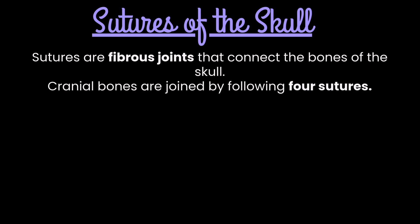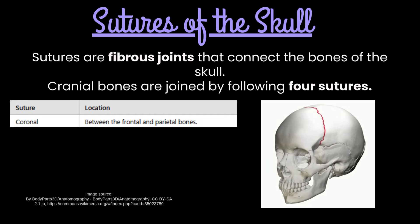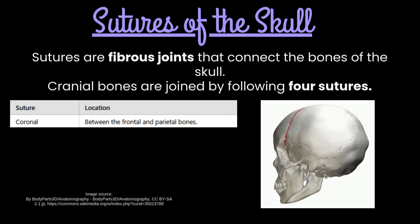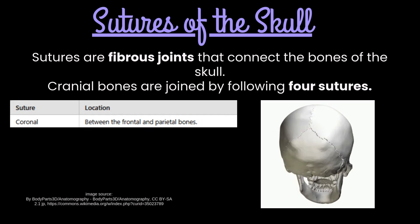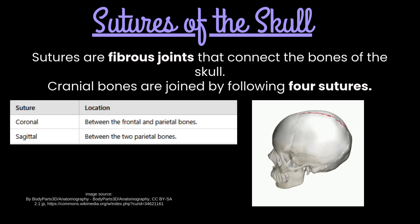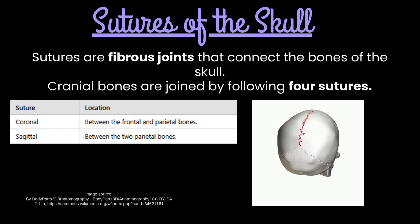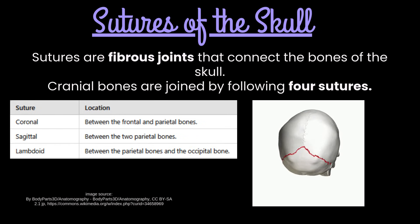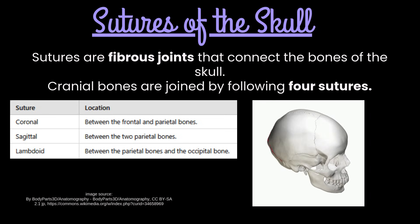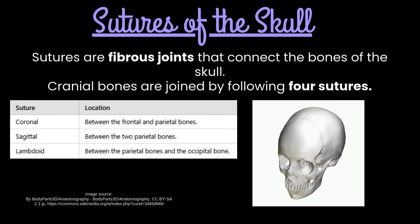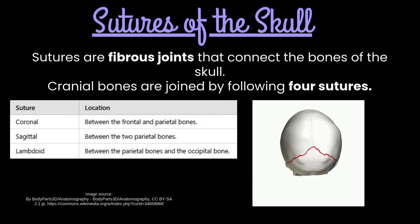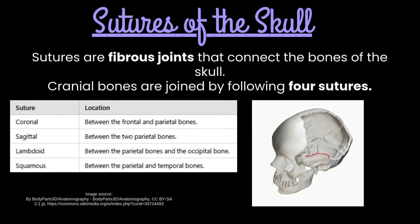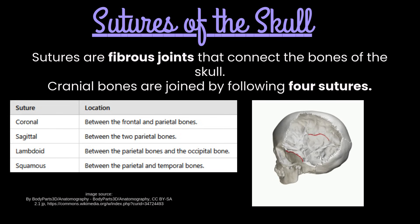Sutures are fibrous joints that connect the bones of the skull. Cranial bones are joined by four sutures. Number 1: Coronal suture, located between the frontal and parietal bones. Number 2: Sagittal suture, located between the two parietal bones. Number 3: Lambdoid suture, located between the parietal bones and the occipital bone. Number 4: Squamous suture, located between the parietal bones and temporal bones.